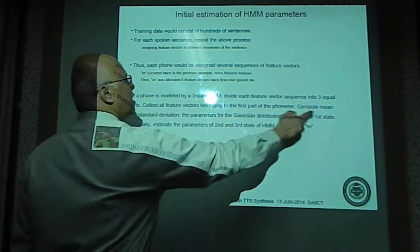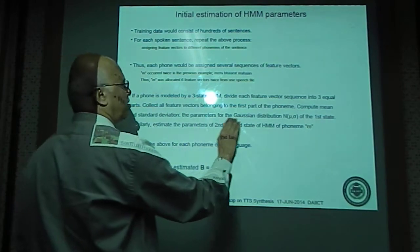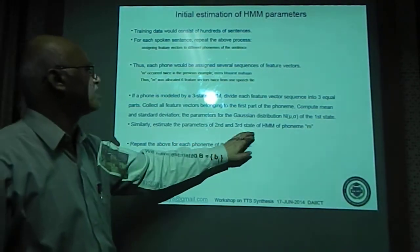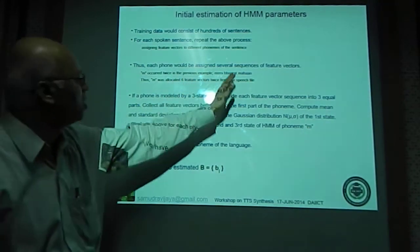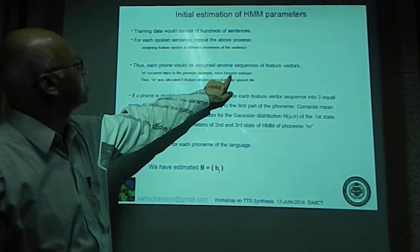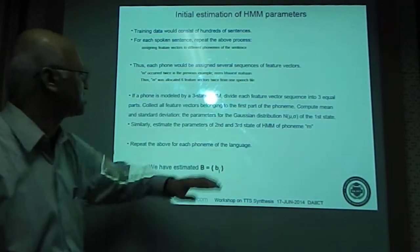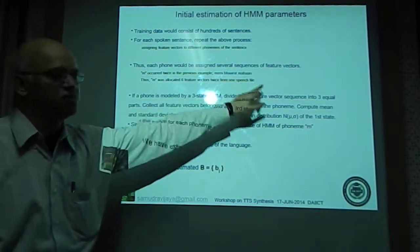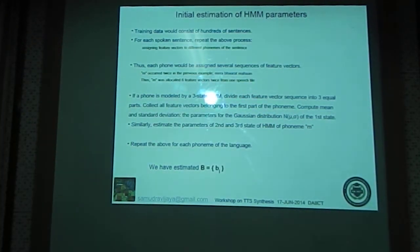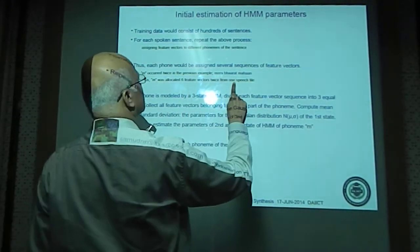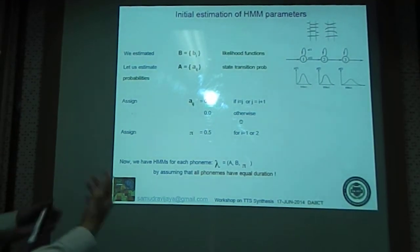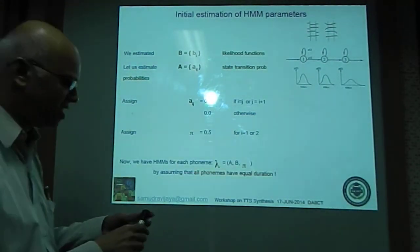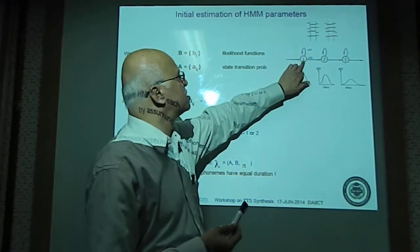We can now compute the mean and standard deviation, which gives the parameters of the Gaussian distribution associated with the first state of M. We do this for the second state of M and for all other phonemes. Training doesn't consist of just one speech file — it consists of several sentences. We collect all such segments from all training data and then estimate the parameters of the distributions associated with each state.